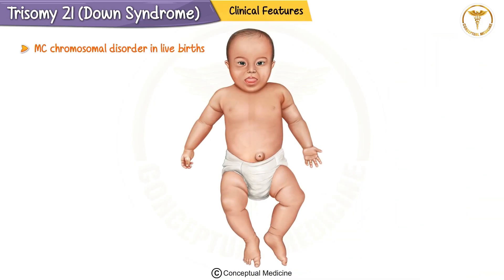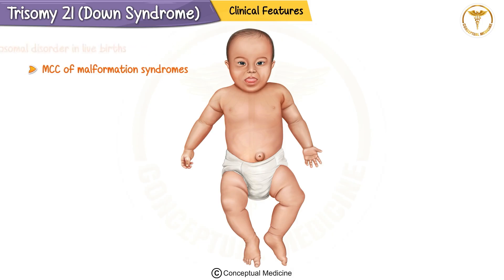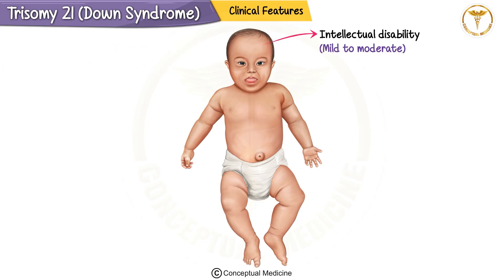Down syndrome is the most common chromosomal disorder in live births and also the most common cause of malformation syndromes. Let's explore the features of this condition. Children with Down syndrome often have intellectual disability, which can range from mild to moderate.